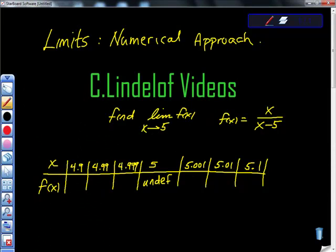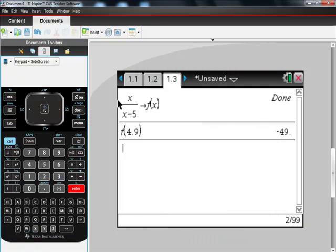I record that in my table here. I'm going to record that in my table here. And that value is negative 49. I'm not going to do this for every single one of them. I just want to show you what I would have done. Negative 49. And I go back to my calculator. And I take F of 4.99. As you can see, it's getting much closer to 5 now. I'm going to do the same thing again. 4.99.